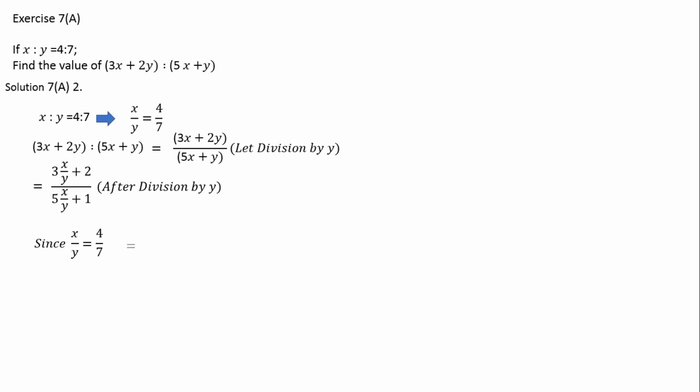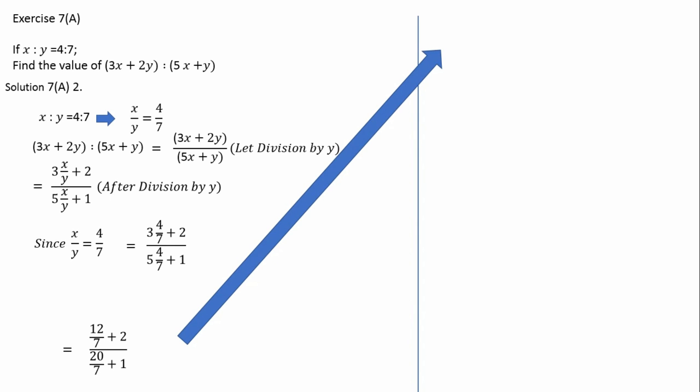Since we know x/y = 4/7, if we put this value, we can have 3 × (4/7) plus 2, over 5 × (4/7) plus 1. This becomes 12/7 plus 2, over 20/7 plus 1. After taking LCM, we have (12 plus 14)/7 over (20 plus 7)/7, which is 26/7 over 27/7. The 7s cancel and the answer is 26/27.